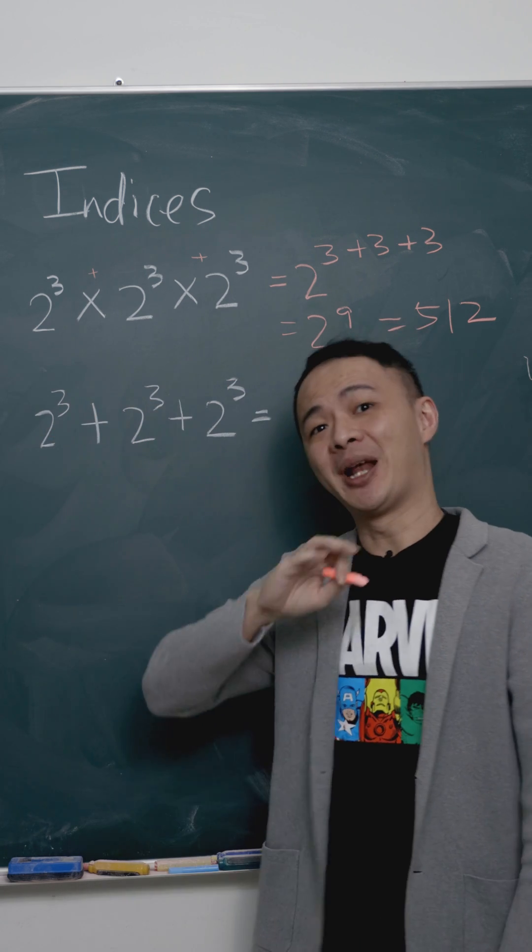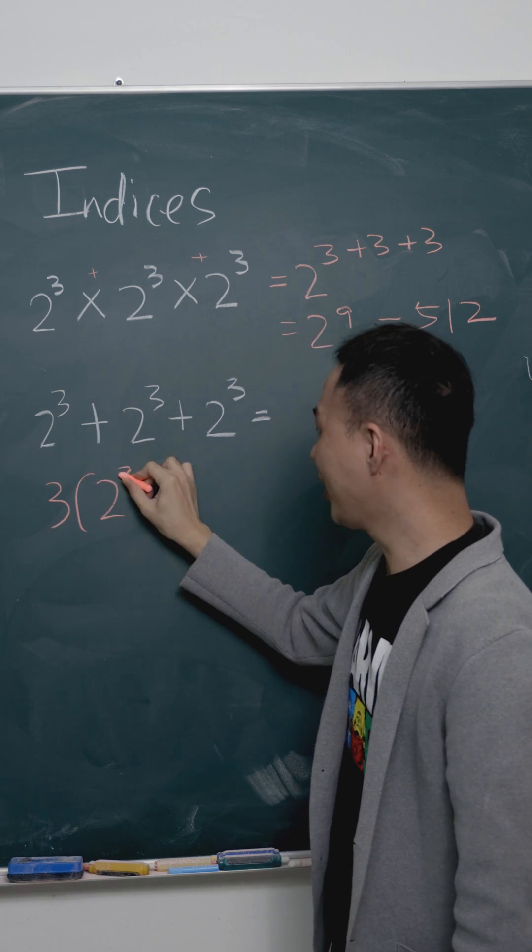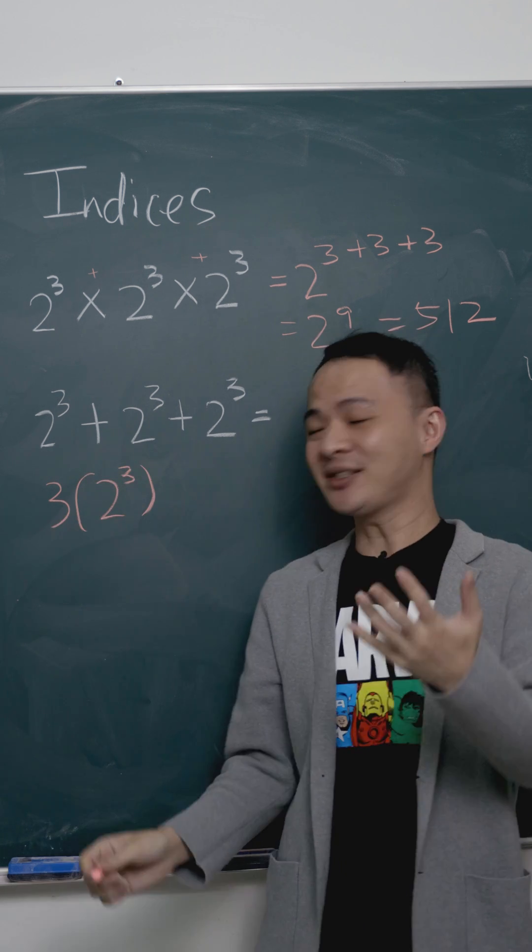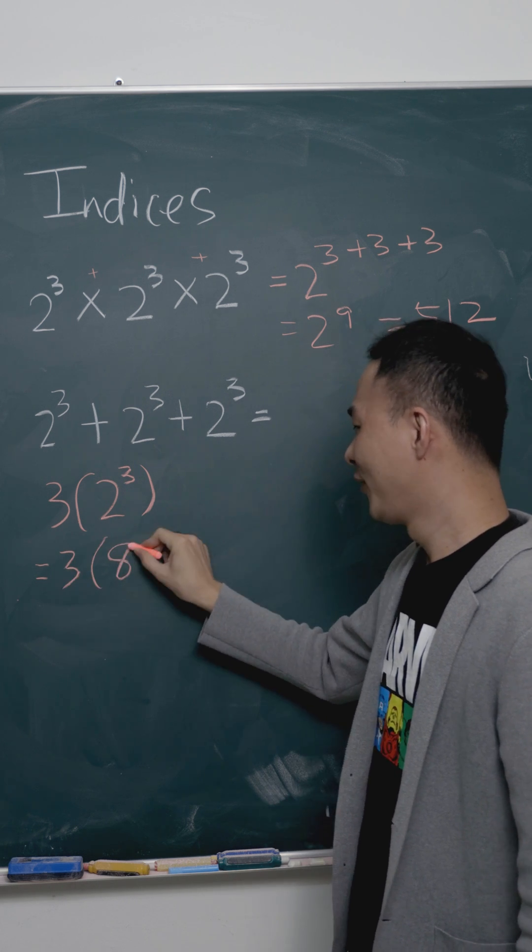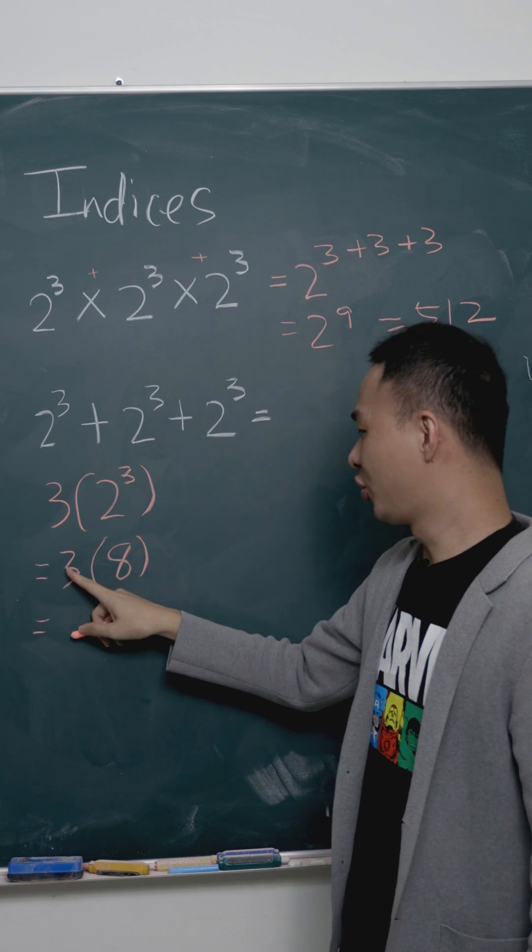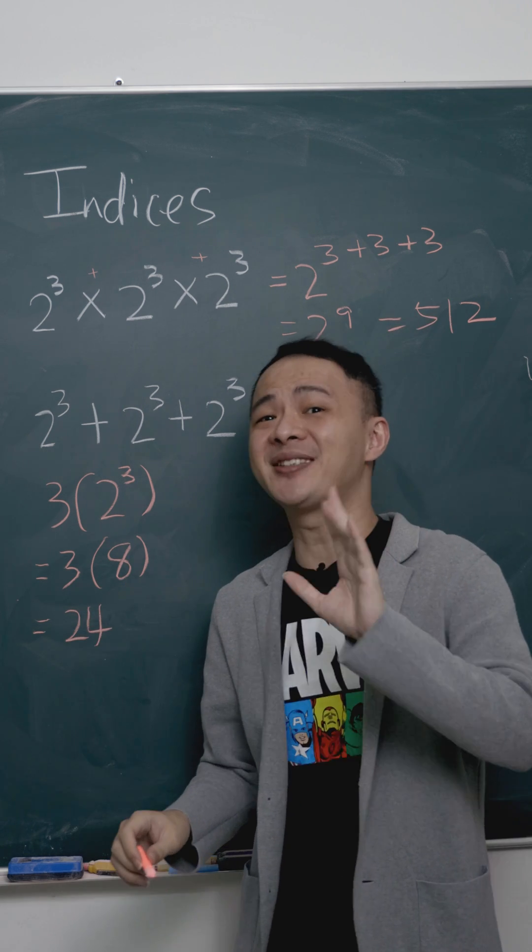What is 2 power of 3? 2 power of 3 is 8. So which is 3 multiply 8, which is 24.